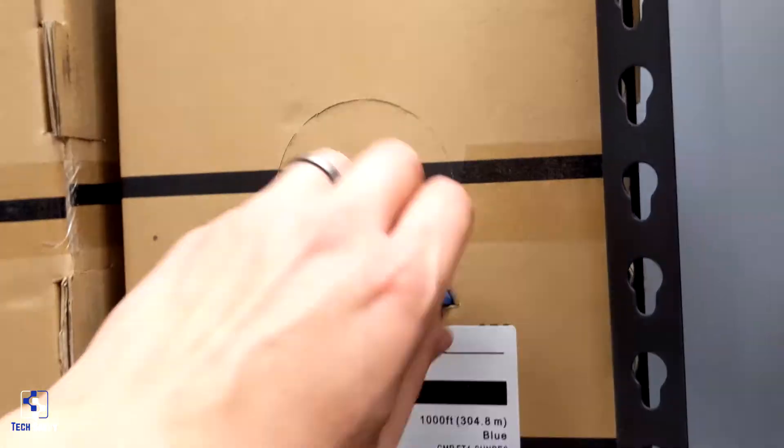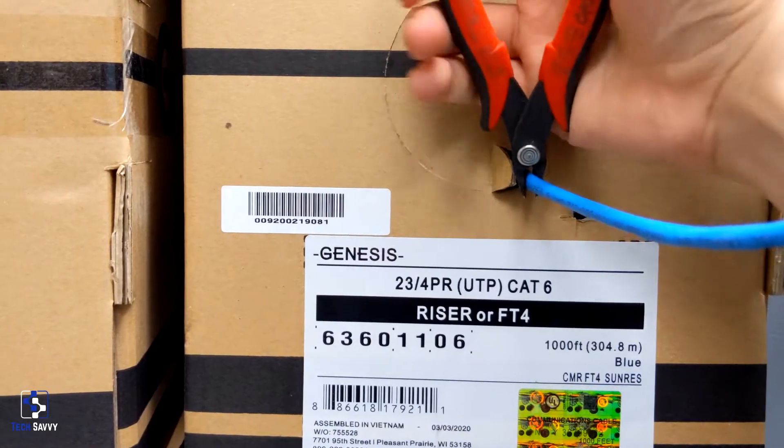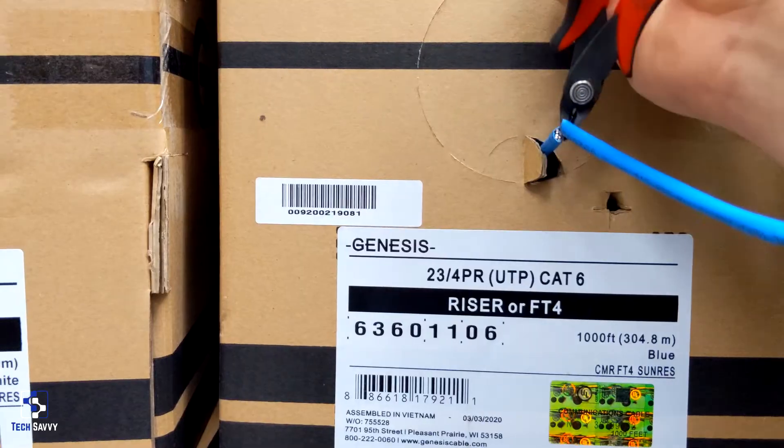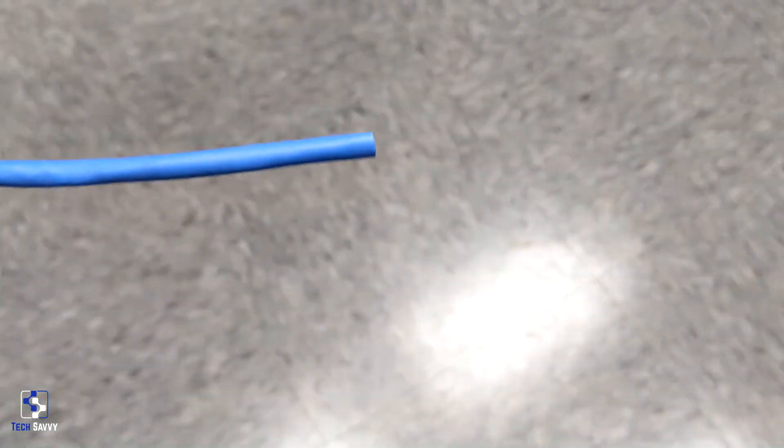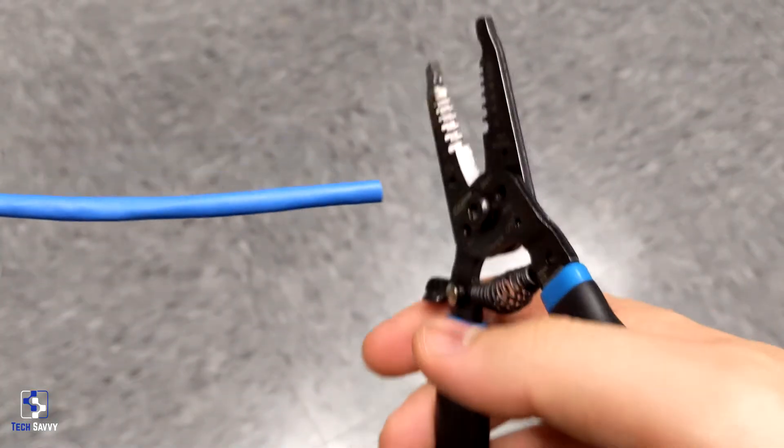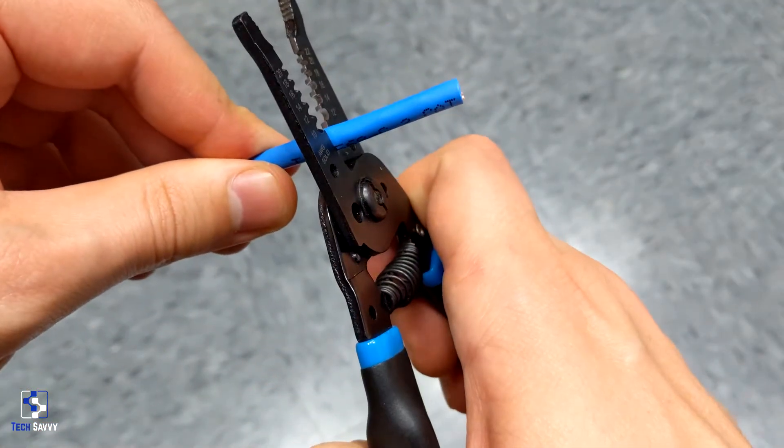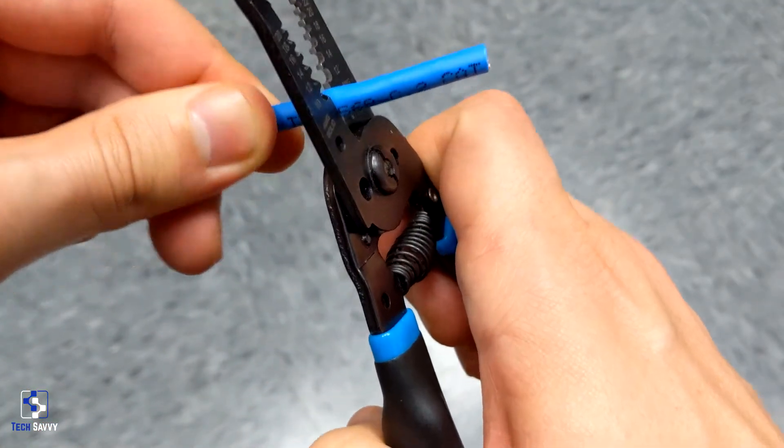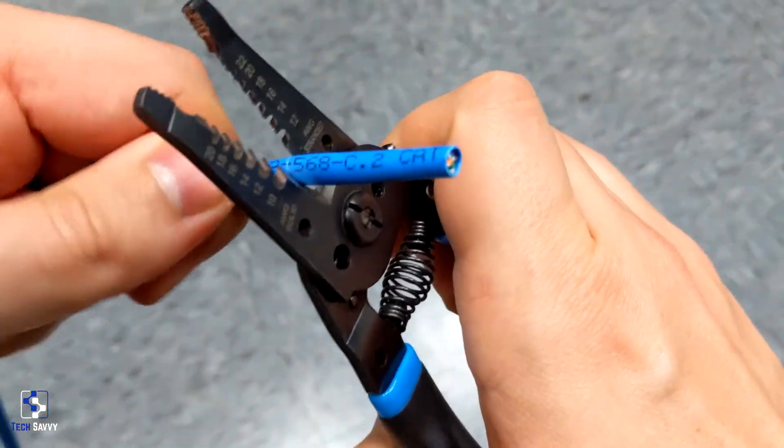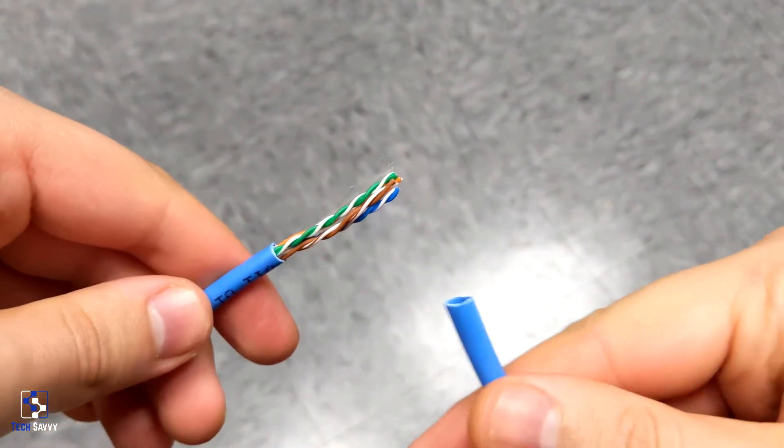Alright, let's get started. We're going to take about an inch away from the end, and we're going to lightly put some pressure and then spin it around, because we don't want to cut the small conductors inside.